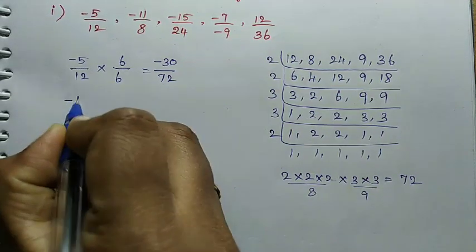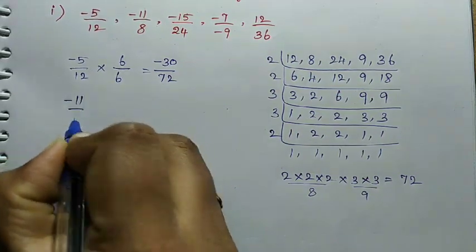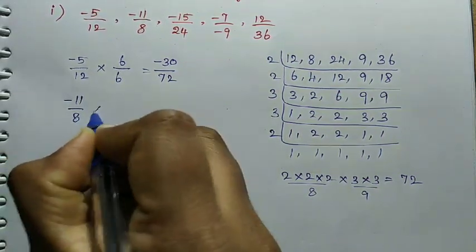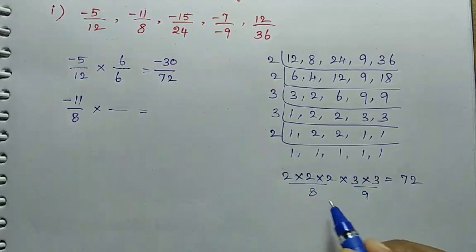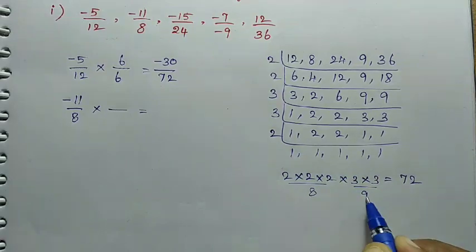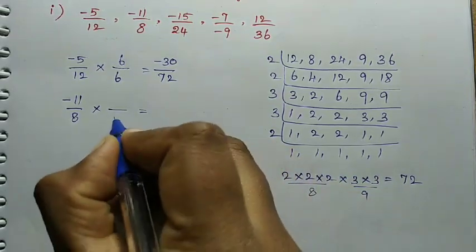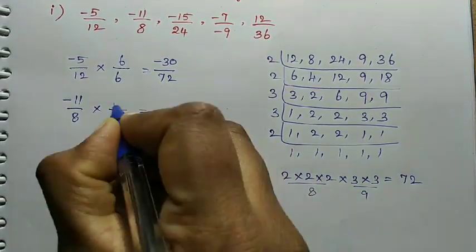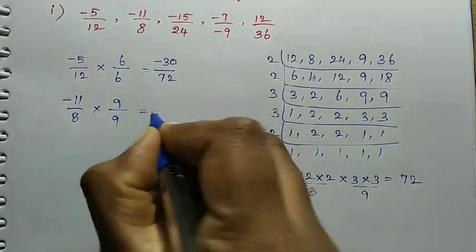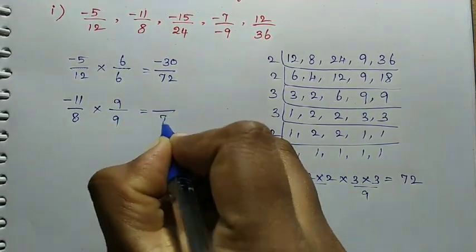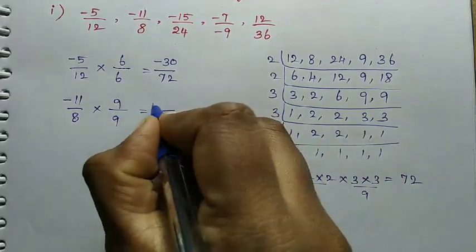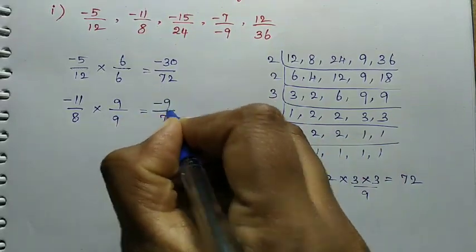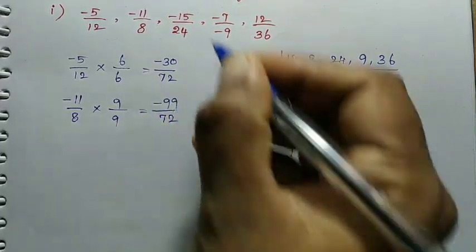Next value: minus 11 divided by 8. Since 8 is in the denominator, we multiply by 9 to get denominator 72. Numerator value: minus 11 multiplied by 9 = minus ninety-nine. So minus 11/8 becomes minus 99/72.